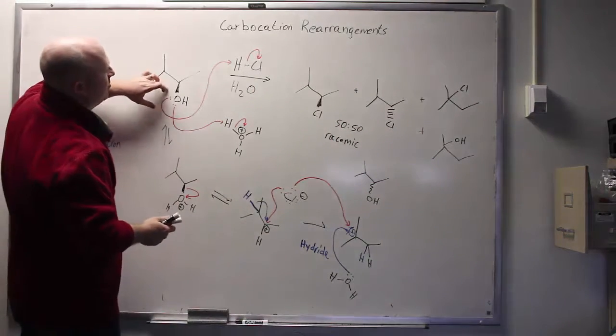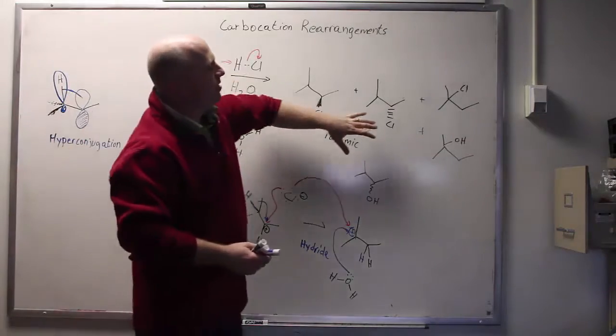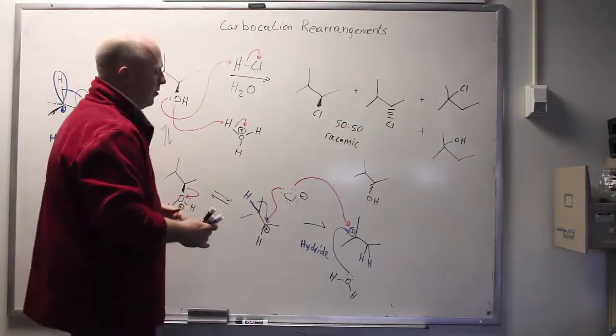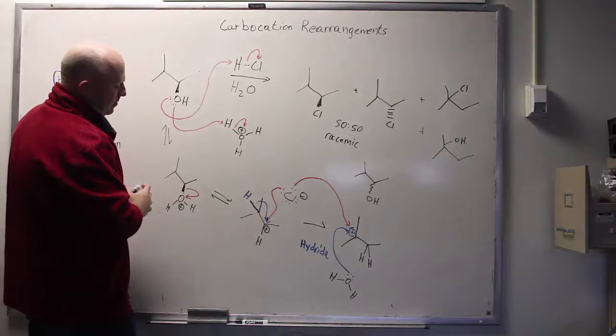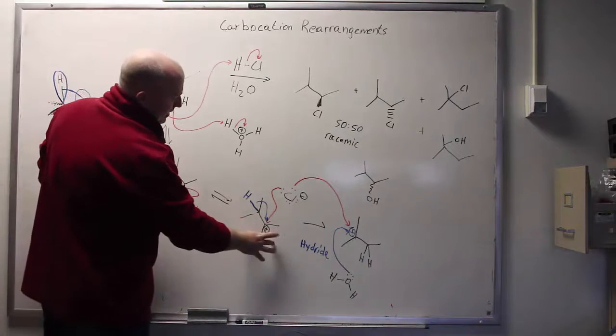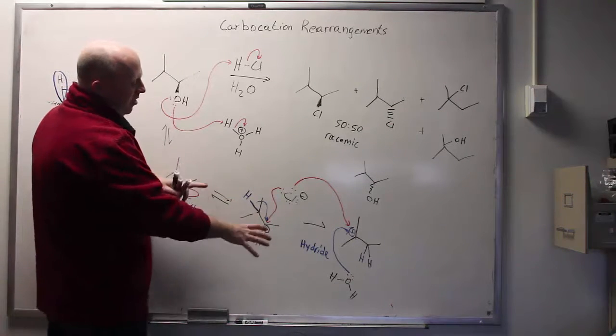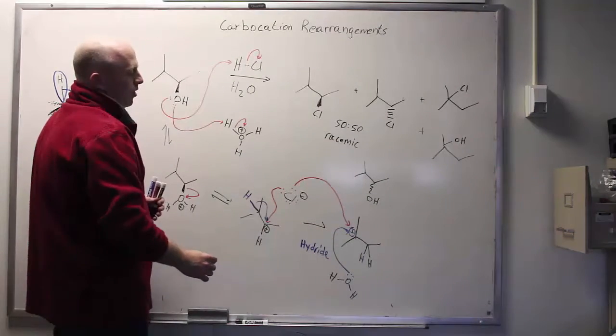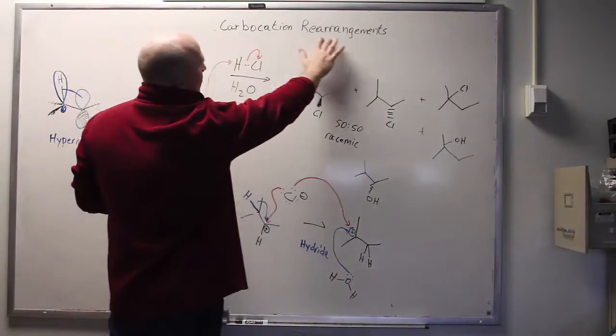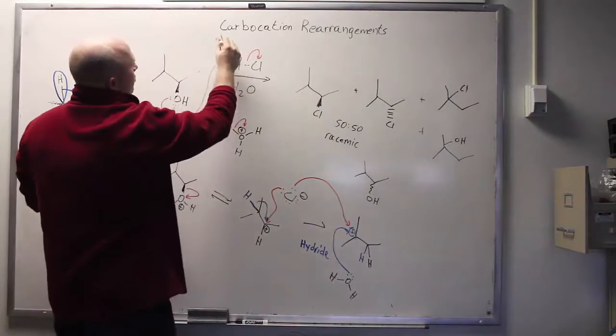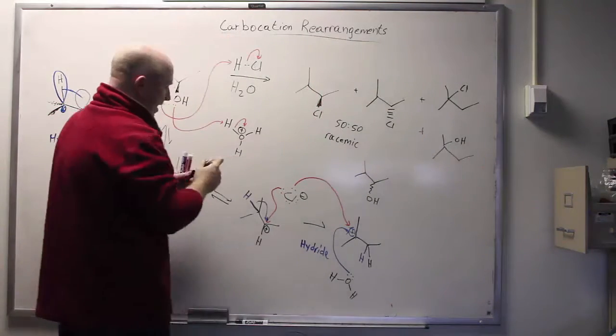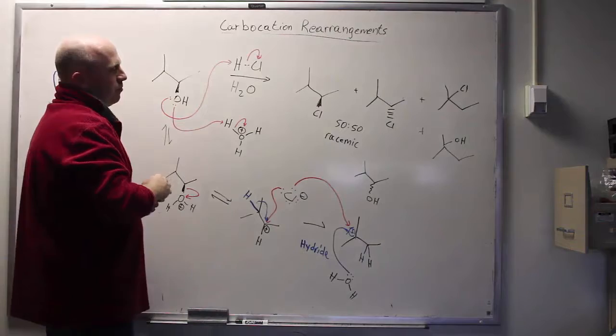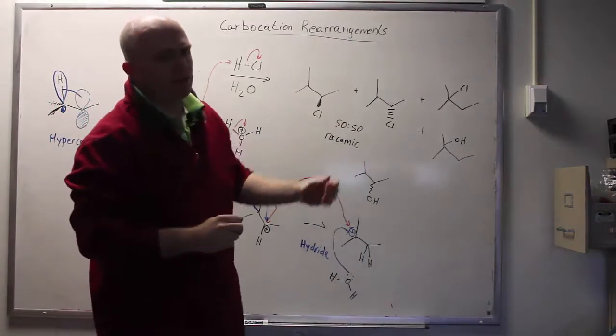So what happens when you allow this to react in this fashion? You destroy the stereochemistry and you lead to a plethora of products. Largely that's because as soon as you generate a secondary carbocation, the things that are around it trying to stabilize it might very well slide over and generate a more stable carbocation. So carbocation rearrangements essentially amount to: as soon as you generate the carbocation, you can have things slide around to make things more stable overall, and that leads to a potential mess.